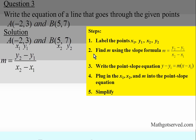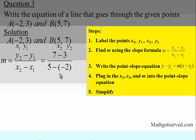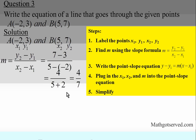Step two: find the slope using the slope formula. It's good to always write down your formula first before applying it. We plug in: y2 minus y1 is seven minus three, and x2 minus x1 is five minus negative two. Seven minus three is four; five minus negative two — multiplying the minuses gives plus — so it's four over five plus two, giving four over seven. That's our slope.